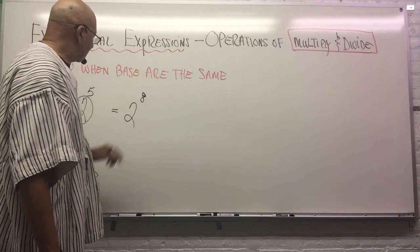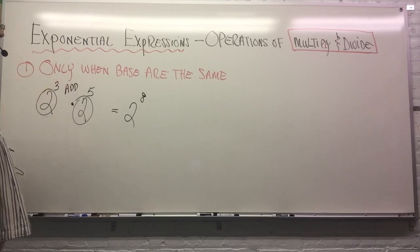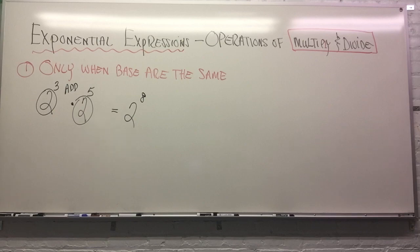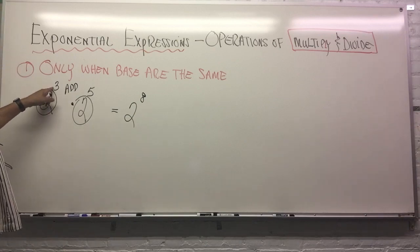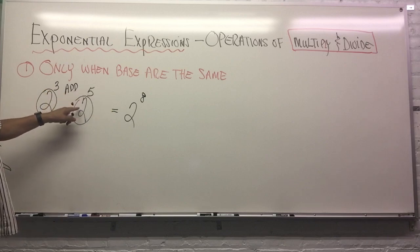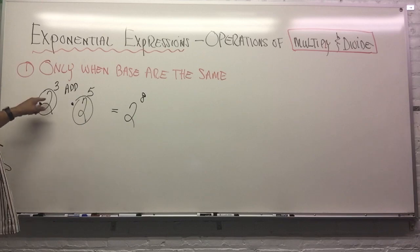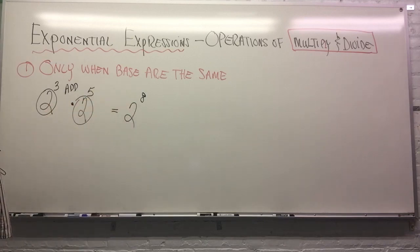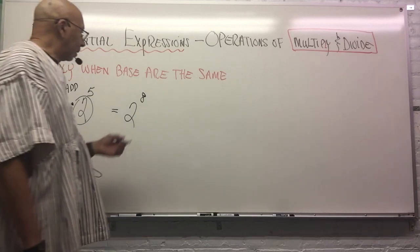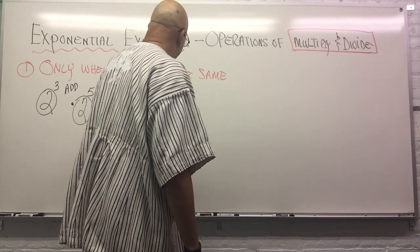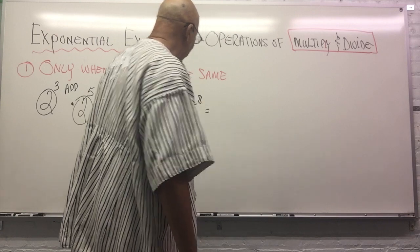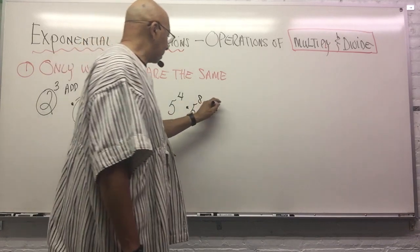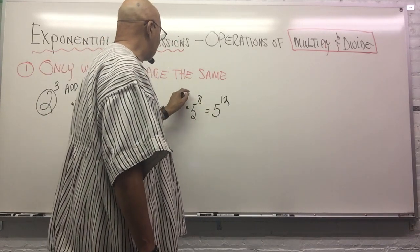So this will be two to the eighth power. If I have two to the third power times two to the fifth power, that's two to the eighth power. Two to the third power means two is going to be used as a factor three times. Two to the fifth power means two is a factor five times. So two will be a factor eight times. For example, five to the fourth power times five to the eighth power equals five to the twelfth power, because I keep the base and add the exponents.